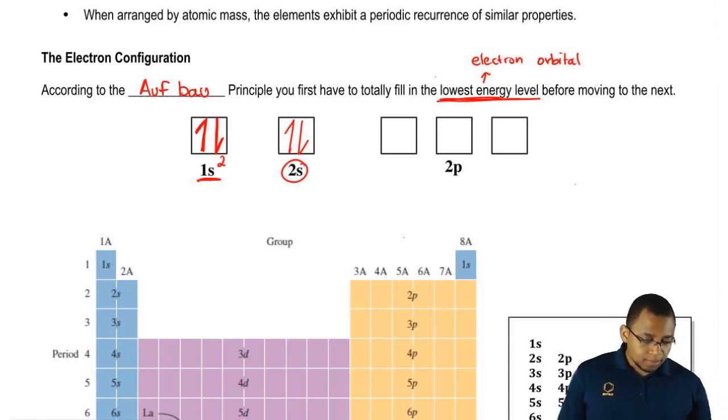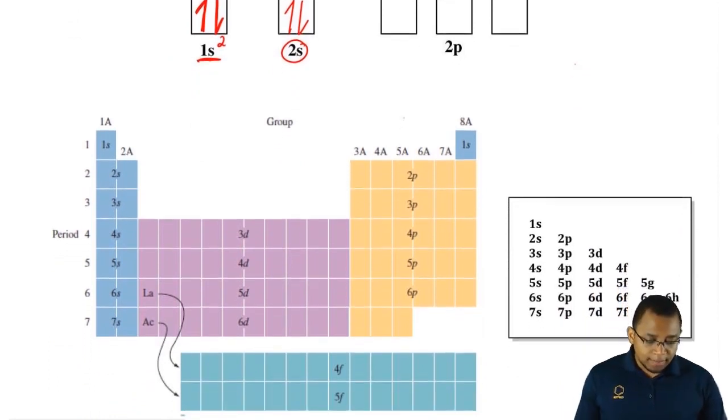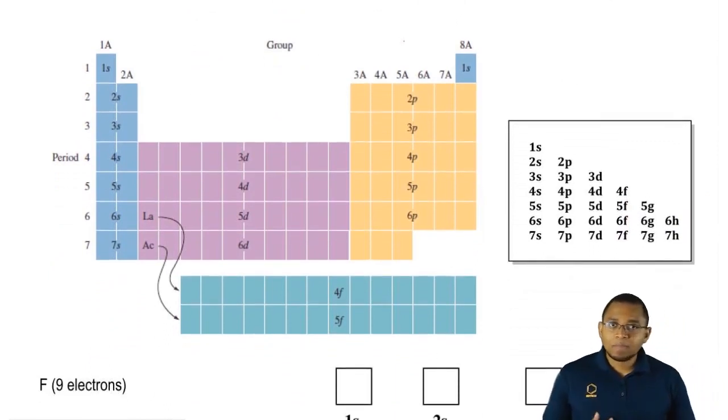Now, for 2p, we'll see what happens when we have to fill in 2p when we go lower down. But before we do that, we've been talking about the electron configuration. How am I supposed to know what the electron configuration of an element is?